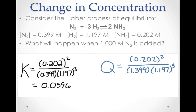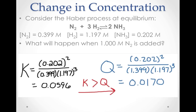The reaction quotient, with the increased nitrogen concentration, has a value of 0.0170. Since Q is smaller than K, the system must shift to the right to make more products to come back to equilibrium so that Q can be equal to K. So besides the calculations that support it, why does this happen?